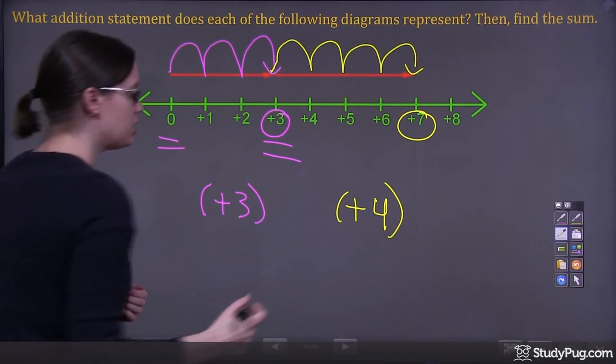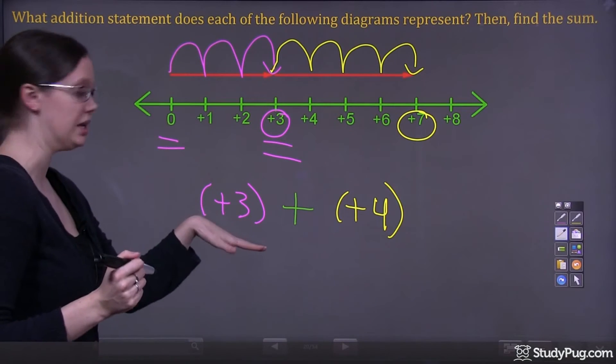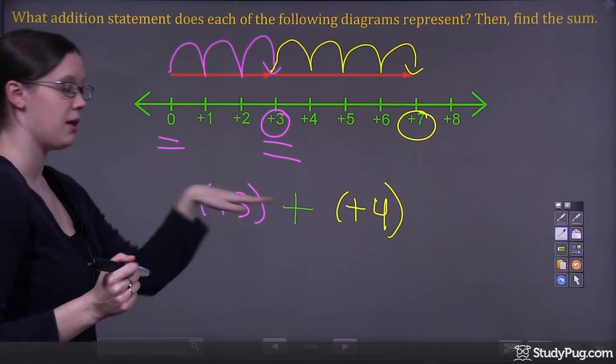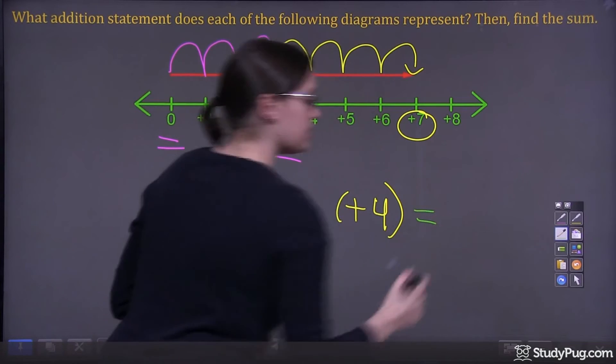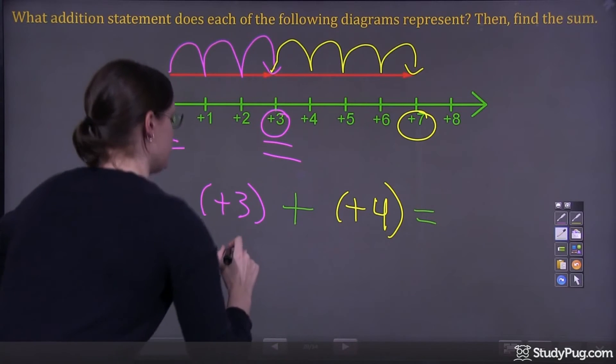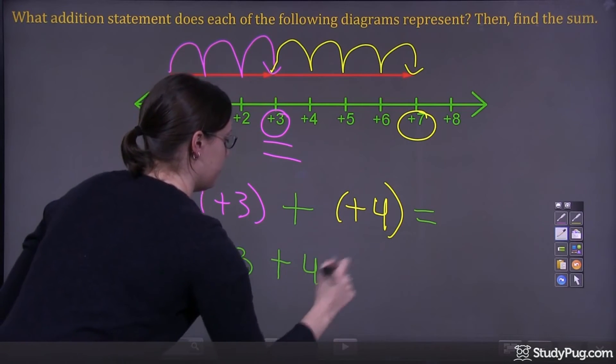And because we're doing integer addition, remember to add our addition symbol. This here is our statement. We have positive 3 plus positive 4. Another way we can write this, I'll rewrite it in green. So we have 3 plus 4.